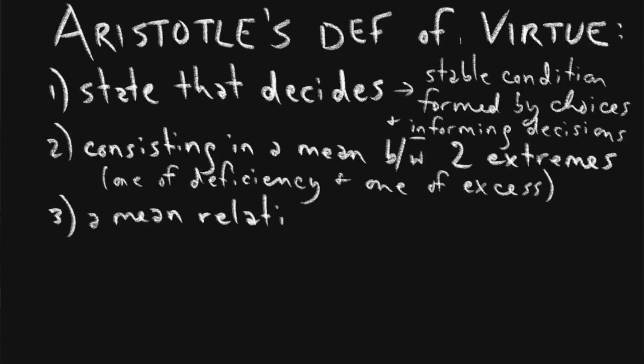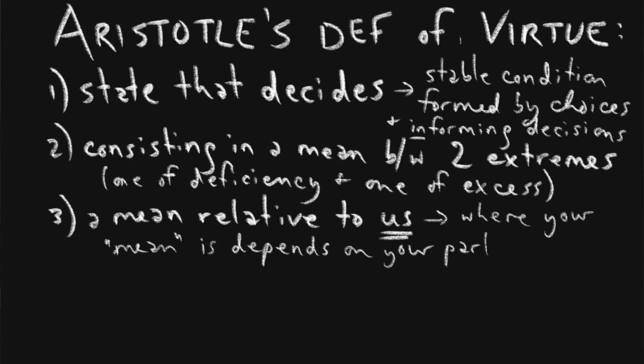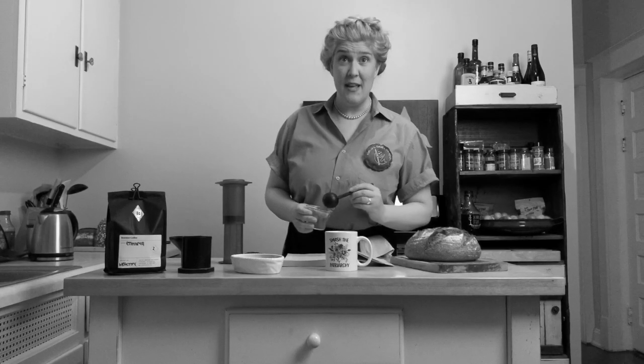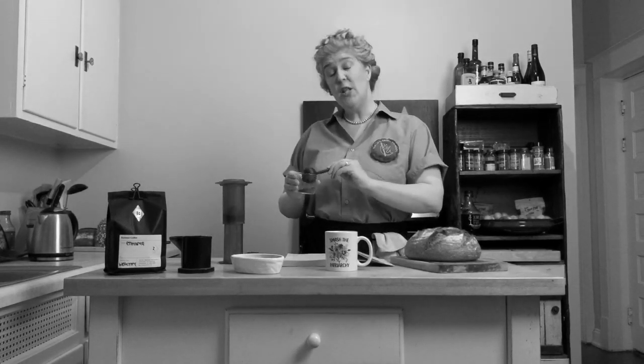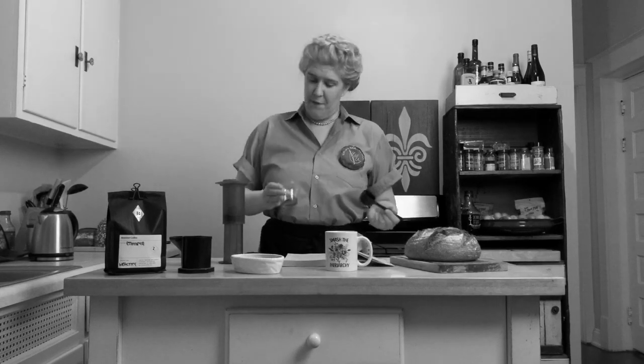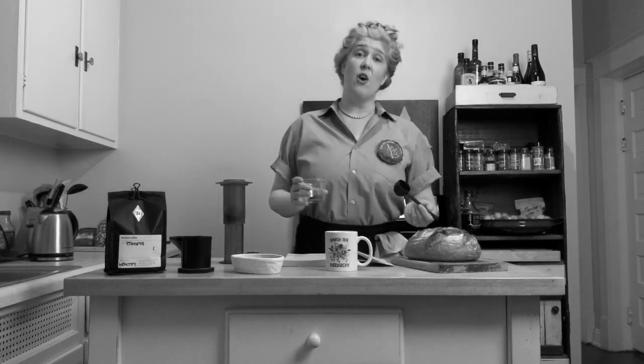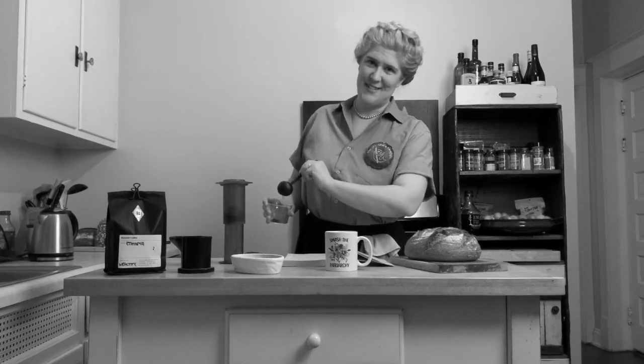Virtue, says Aristotle, will be somewhere in the middle. But as he points out with the third part of his definition, it's a mean between two extremes relative to us. I'm making coffee at the beginning of the morning, so I'll load it up a little more because I prefer it that way. If it's rather late in the evening and I just want a little coffee before bed, then I'll put a little less in.